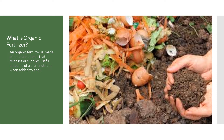An organic fertilizer is made of natural material that releases or supplies a useful amount of plant nutrients when added to soil. Some natural materials used in organic farming include humus, remains of animals, and many other natural things found in the environment. Once broken down and molded in the soil, they can be used as organic fertilizers.